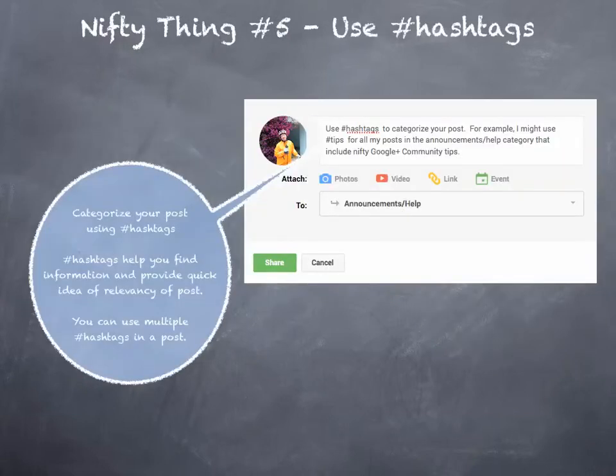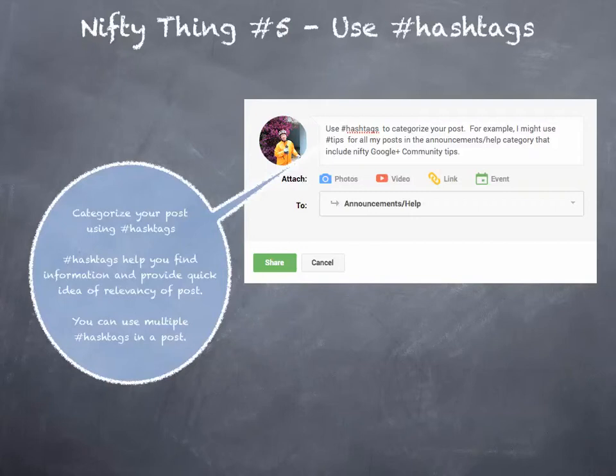Nifty thing number five: use hashtags. In this example, I've used the hashtag 'tips'. You use the little pound sign and then the word you want for the hashtag. This is a way to categorize your post or refine the category. For example, I'm posting in the announcements help area, but if I use the hashtag tips every time I post a tip, you can click on that hashtag and find all of those posts very easily.